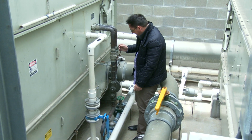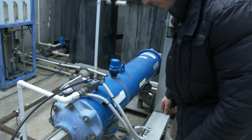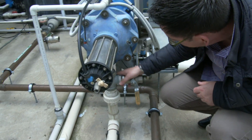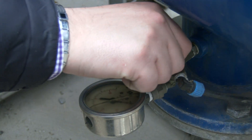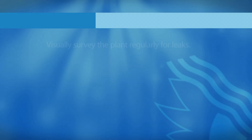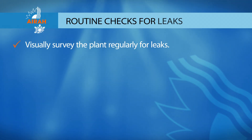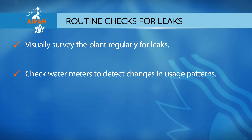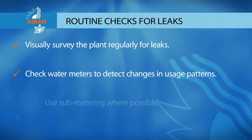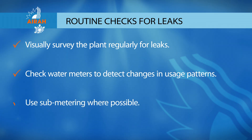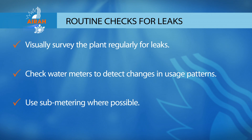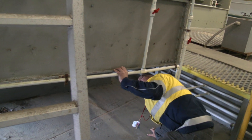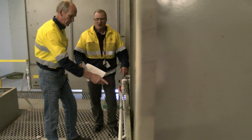Leaks can occur at any time and will disturb the balance of water treatment systems by diluting the system with more make-up water than expected. Visually survey the plant regularly for leaks. Check water meters to detect changes in usage patterns, and use sub-metering where possible. A sharp decrease in water conductivity could also indicate the presence of a leak.